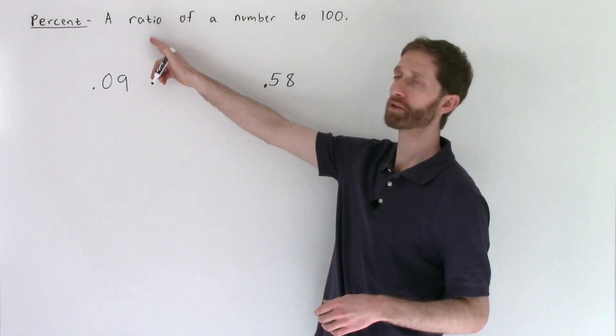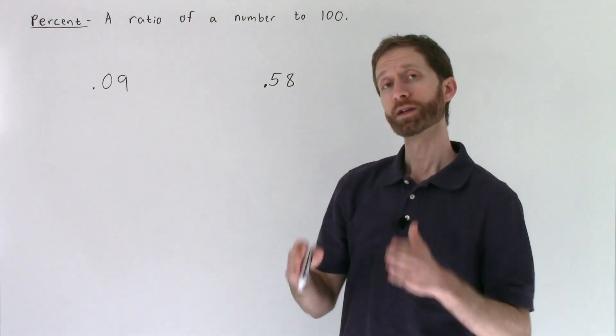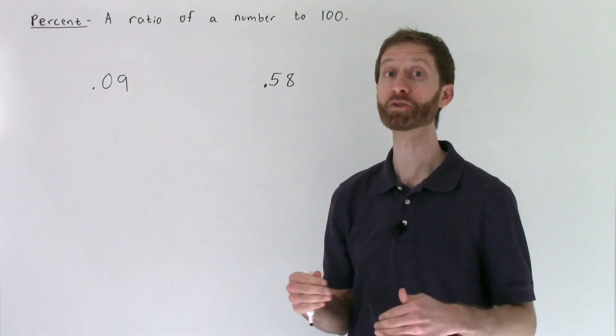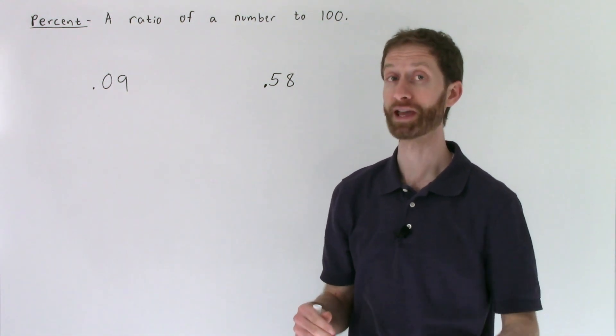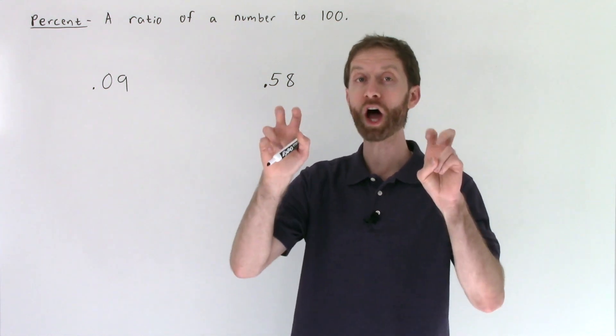Just keep in mind that the definition of a percent is a ratio of a number compared to 100. Decimals are very nice because we have built-in ratios compared to 100 when you look at the hundredths place. So this read out loud is literally nine one-hundredths.